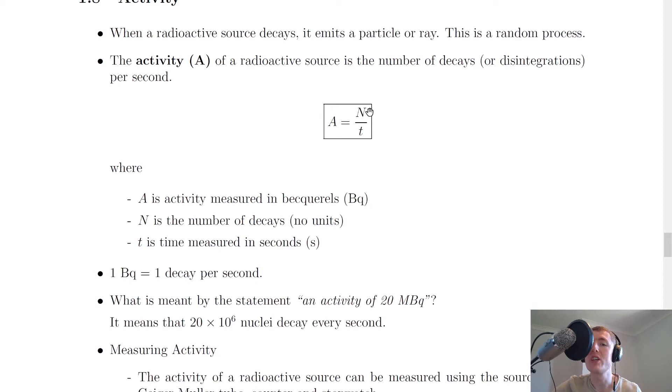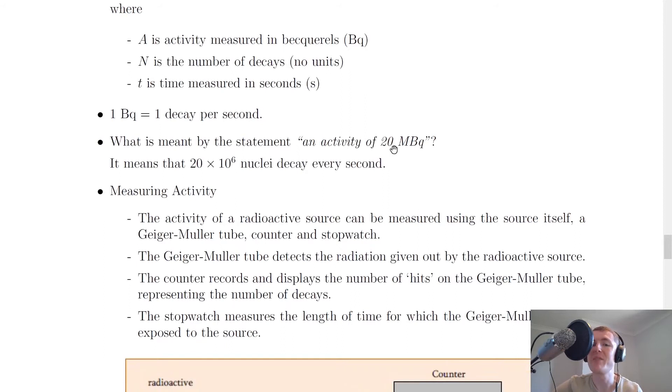We can see that from the equation: if we have 1 becquerel, that equals 1 nuclear decay over time, which is measured in seconds. So 1 Bq equals 1 decay per second. You could also be asked something like: what is meant by the statement 'an activity of 20 mega becquerels'?